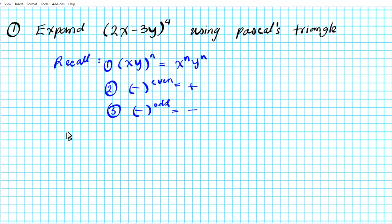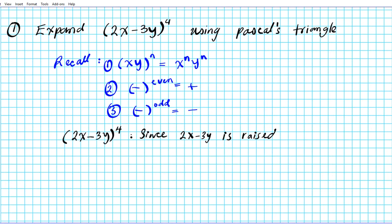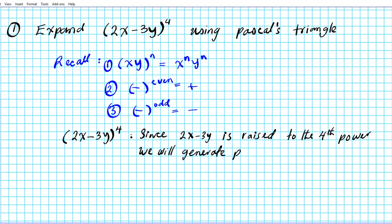So back to the original problem: we have 2x minus 3y raised to the fourth power. Since the quantity 2x minus 3y is raised to the fourth power, we're going to create Pascal's triangle to the fourth row. We will generate Pascal's triangle up to row 4.